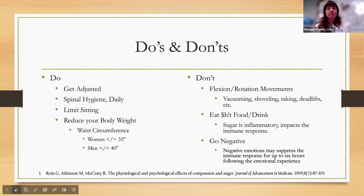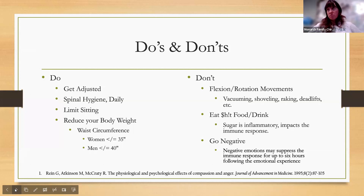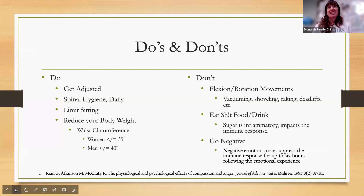Don't do any activity putting you into flexion and rotation movements — that's like vacuuming, raking, or sweeping. For athletes: no deadlifts. Deadlifts put you into forward flexion, then you're grabbing a weight and putting a ton of pressure through your lumbar spine — no deadlifting period. If you're carrying a lot of weight through your middle, for every inch you add to your waist it's like 10 more pounds of pressure placed through your sacrum. Women want to be less than 35 inches, men less than 40 inches. Track that measurement every three months. Don't eat crap food or drink sugar — sugar is inflammatory and actually suppresses your immune response when you consume it.